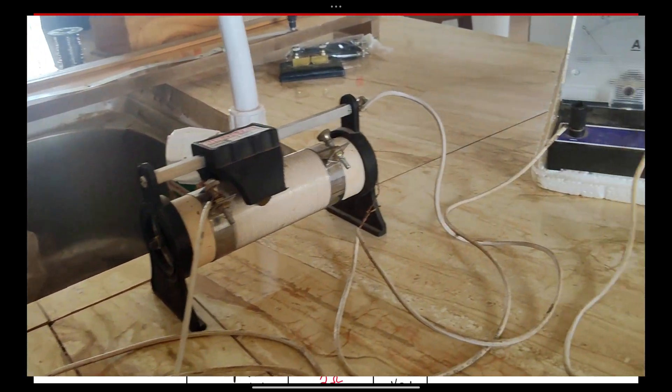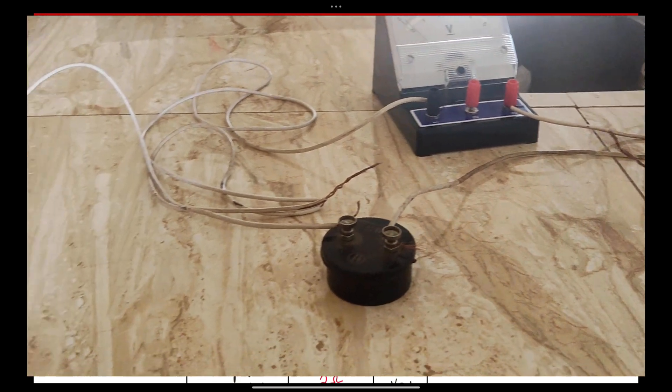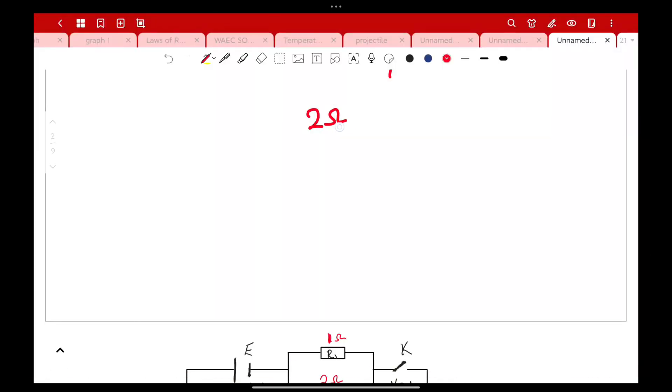Looking at the experiment, these are some of the materials you are going to use. You need a voltmeter, 1 ohm resistor and 2 ohm resistor, and then you will need your jockey. Of course you are going to get your connecting wires and your key.